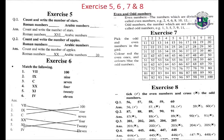OK class, Exercise seven. Pick the odd and even numbers in the gate. Color red the even ones and color blue the odd numbers.